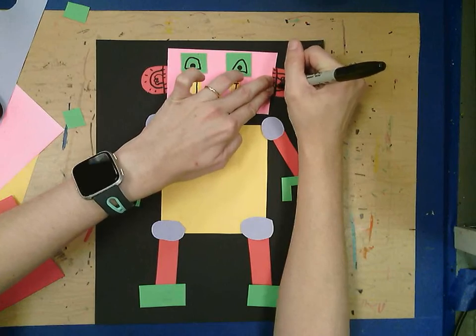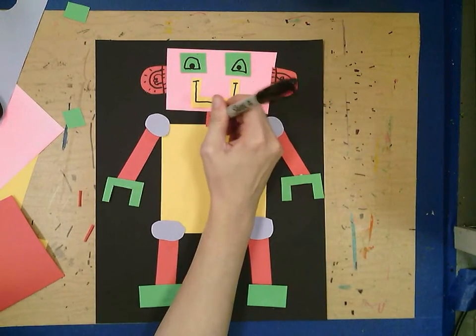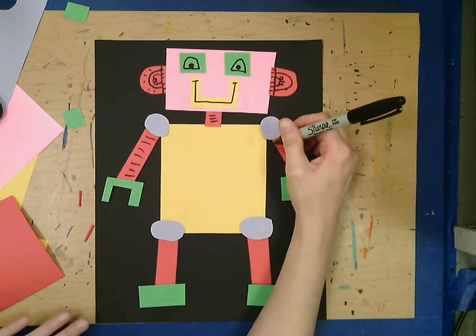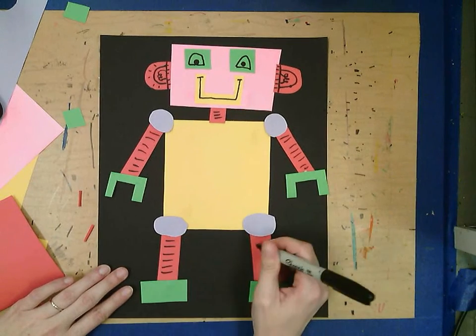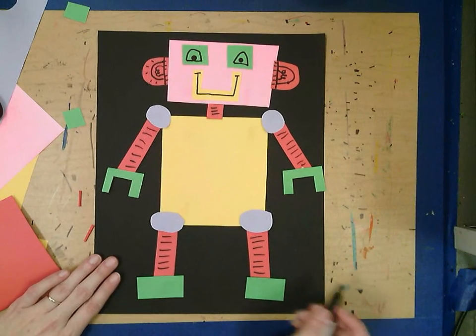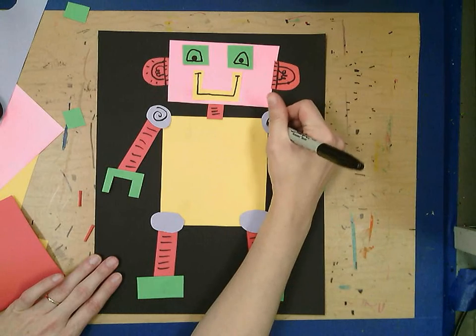Now you might want to wait for your work to dry before you do that. I think this part would be springy, so I'm going to put some lines on it to show that it would bend like that. Maybe there's a swirl here. Maybe he's a fancy robot.